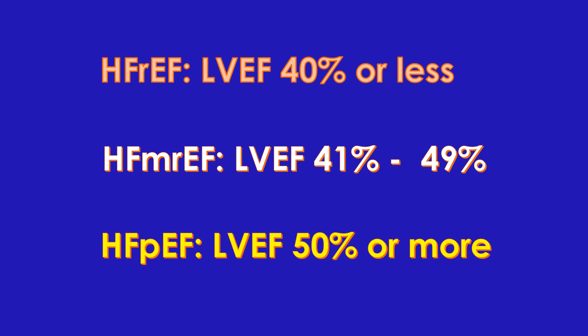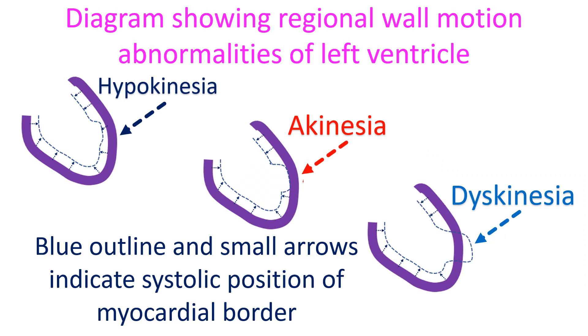Diastolic dysfunction is usually reported as just left ventricular diastolic dysfunction without any grading. Left ventricular diastolic dysfunction is quite common as age advances. Another important aspect is the contraction of each region of the left ventricle. If all regions of the left ventricle contract normally, it is reported as no regional wall motion abnormality.